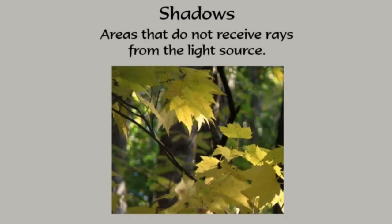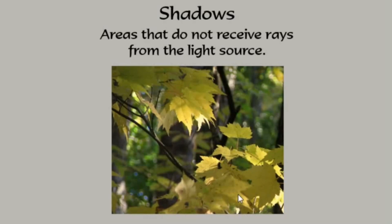Shadows are areas that do not receive rays from the light source. We can see in this image the light source is located in such a way that it's being blocked in most areas. We see very little — a little bit creeping up right in here, a little bit of backlight right in here. Even though this image is very readable and very clear, a large percentage of the area is in shadow.